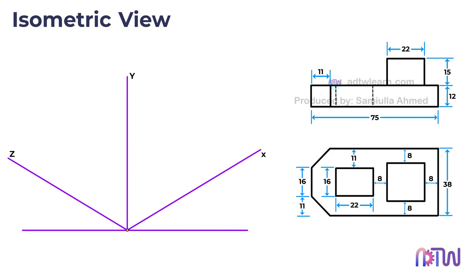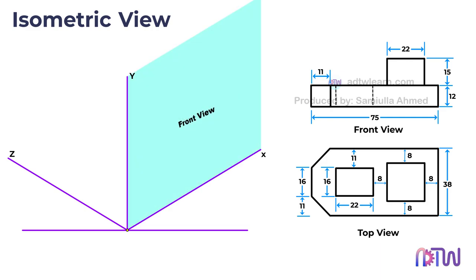Since we will be using the first angle method to solve all the problems, the top figure will be the front view of the object while the bottom figure will be the top view. Remembering these important points will help us accurately construct the isometric view of the object.